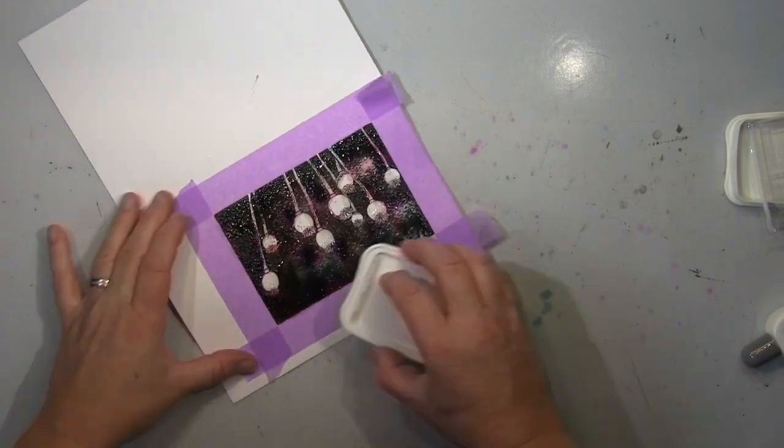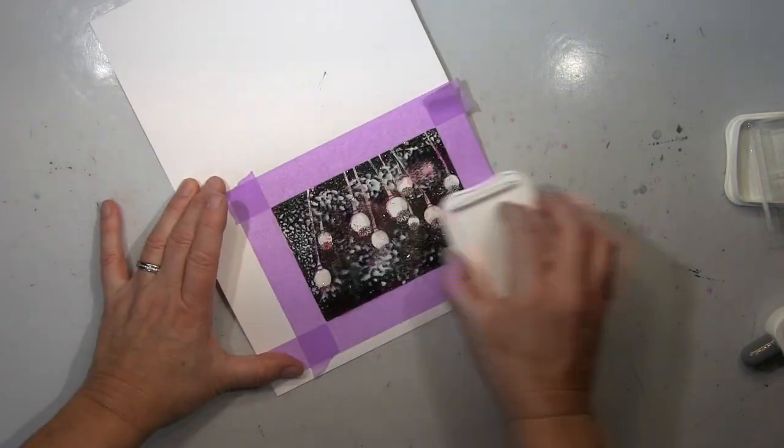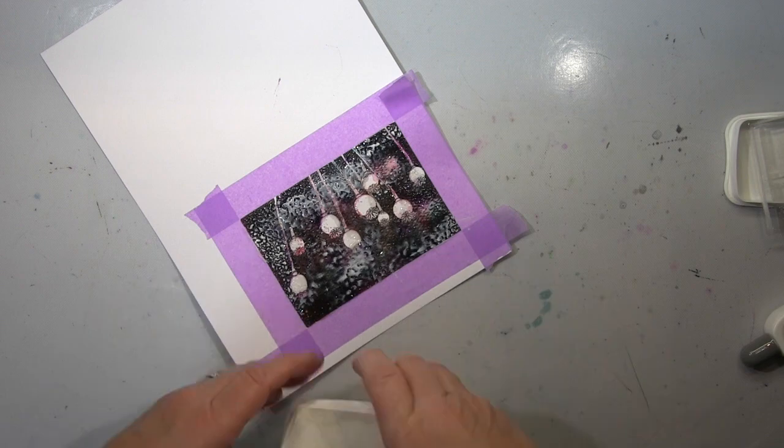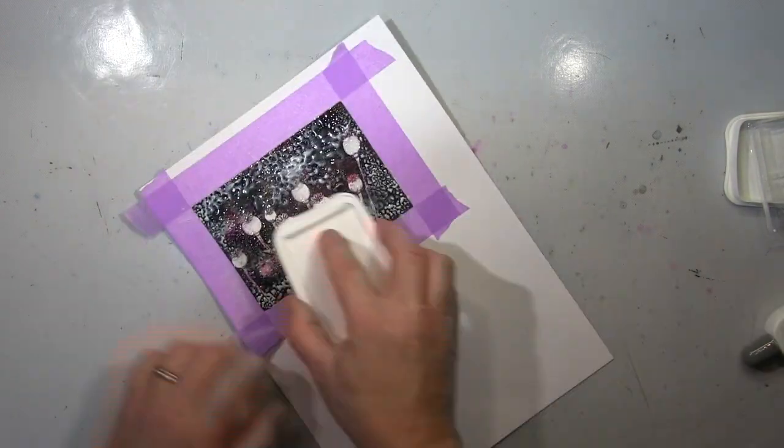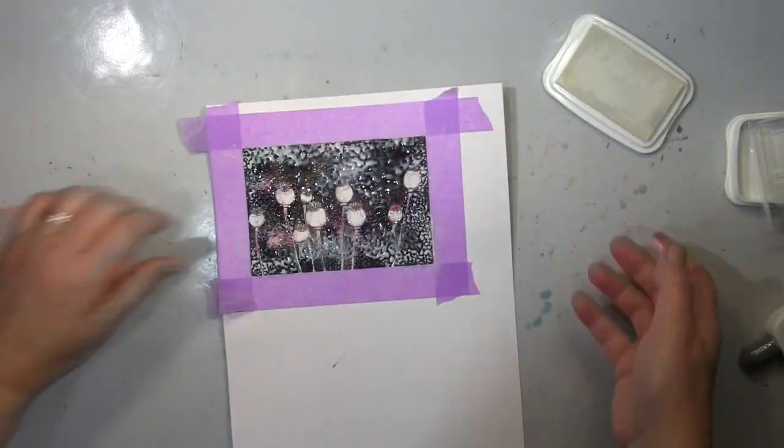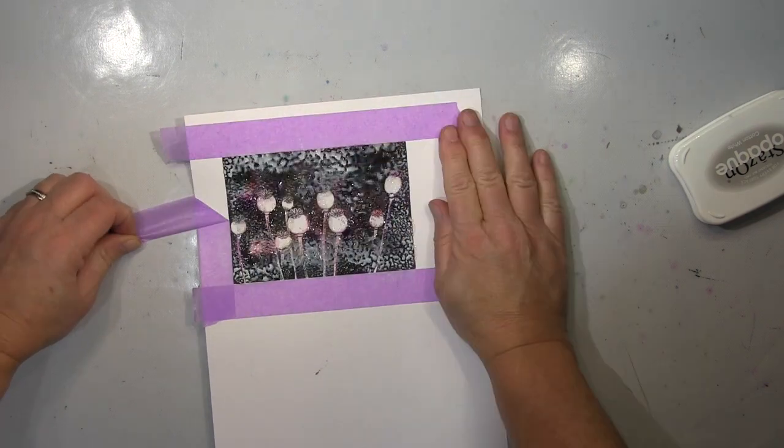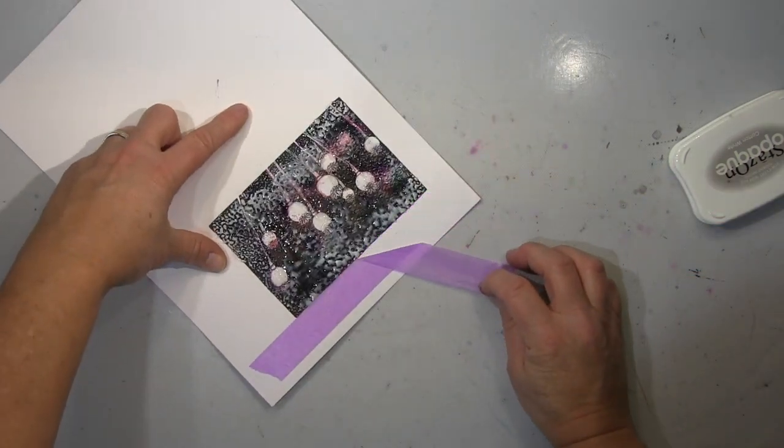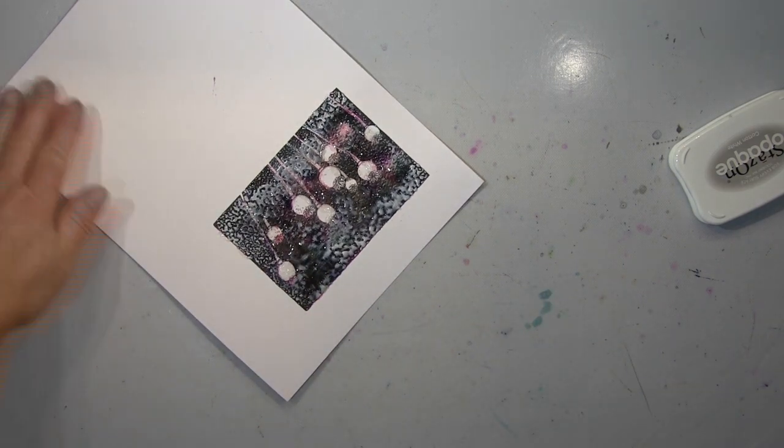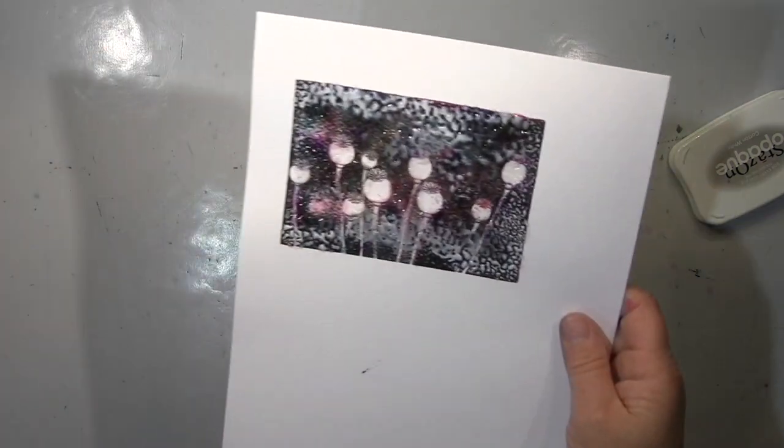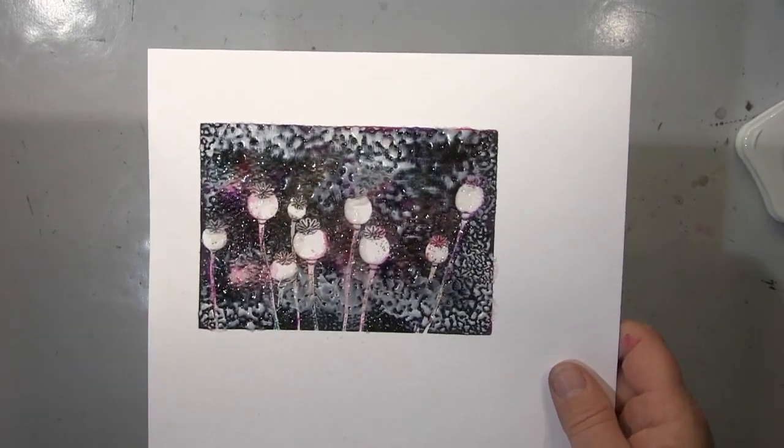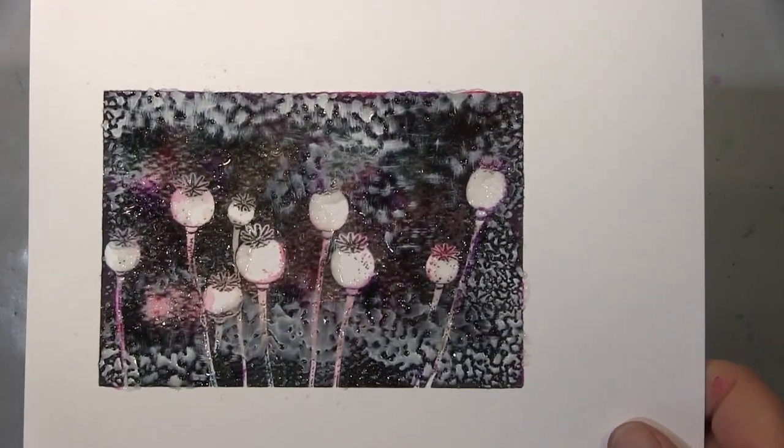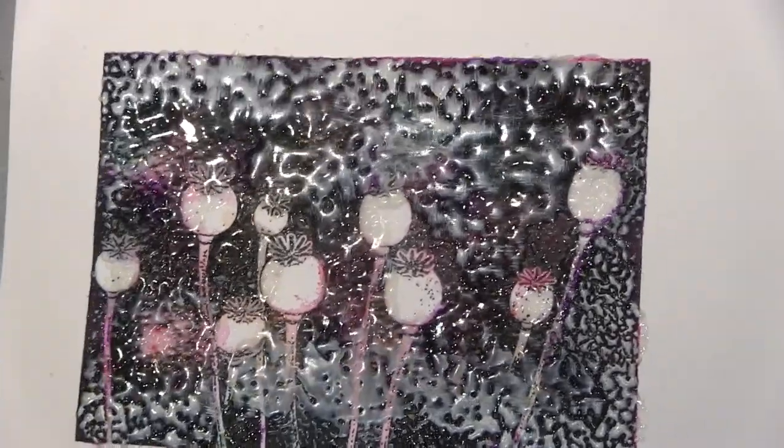Now I'm using this StazOn in white. That's one of the inks they are really opaque. And that's the way I wanted to go over with the whole stamp pad and get this foggy effect. That's what I was after. And I will show it from the close up now.